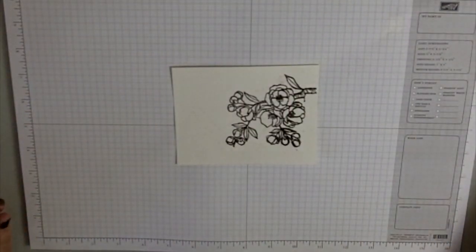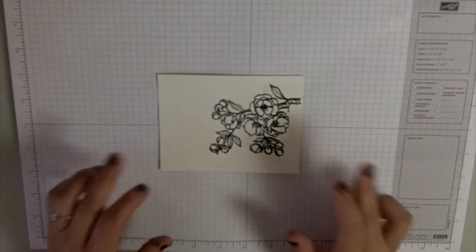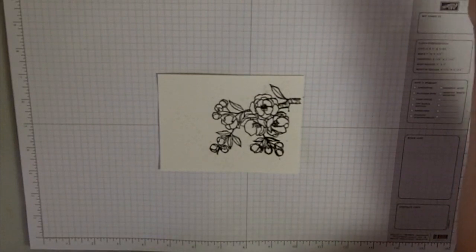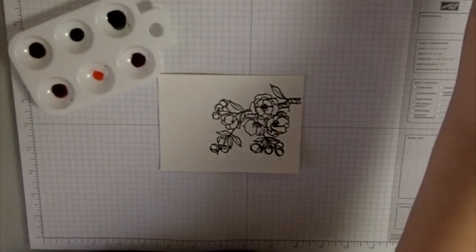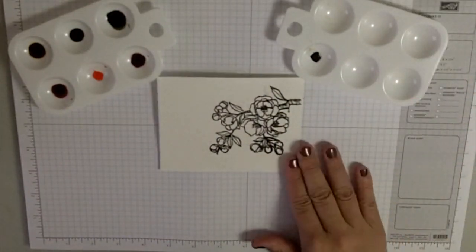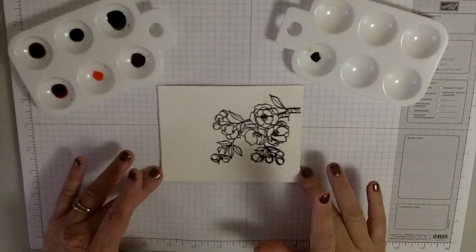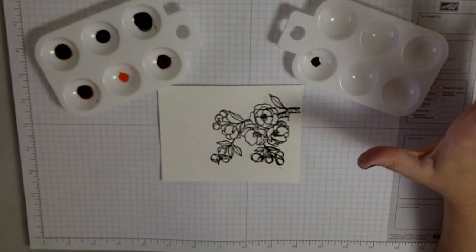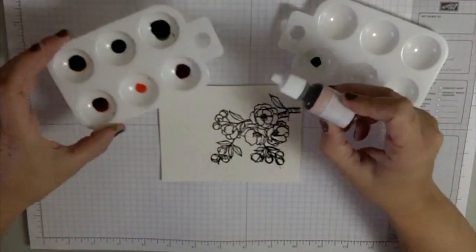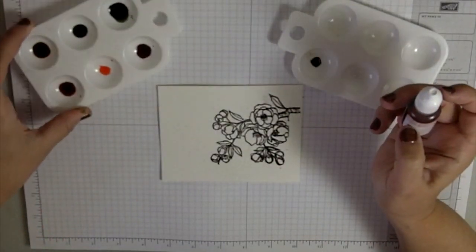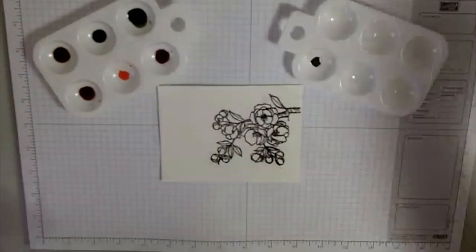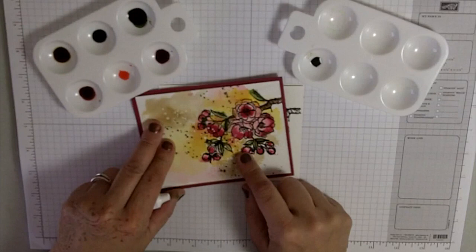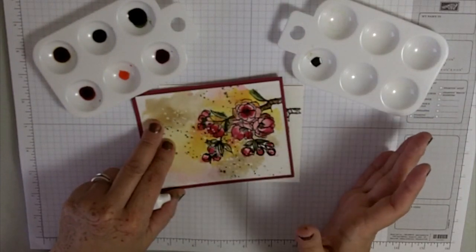I know watercoloring is one of those things that people either love or they hate, but I actually love it a lot. I bought these cells from Joanne Fabrics for 50 cents a piece and I use them for watercoloring. Then I take our reinkers and just put some of the reinkers in the cell. You don't need a lot.